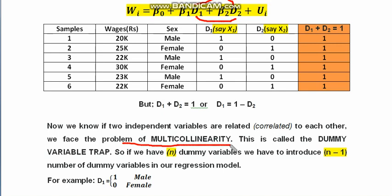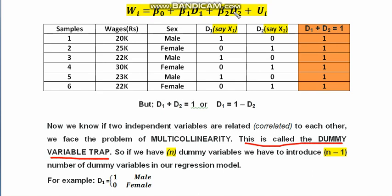When we have multicollinearity, we cannot estimate the parameters reliably, and the variance of the estimators will be very large. So including both D1 and D2 when we only have two attributes is problematic. In the context of dummy variables, this is called the dummy variable trap.